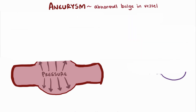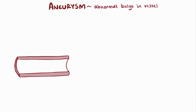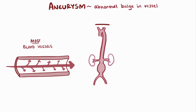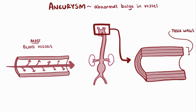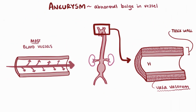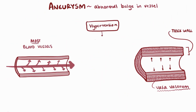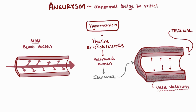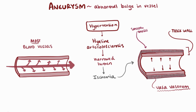One way blood vessel walls weaken is if their layers don't receive enough oxygen. In the first section of the aorta, where walls are super thick and muscular to handle blood pressure from the heart, they need their own blood vessels — called vasa vasorum — to supply the tunica media and tunica externa. In hypertension, the vasa vasorum can develop hyaline arteriolosclerosis, narrowing their lumen and causing ischemia to the aortic wall, resulting in atrophy of the smooth muscle of the tunica media, which weakens the aorta's wall.